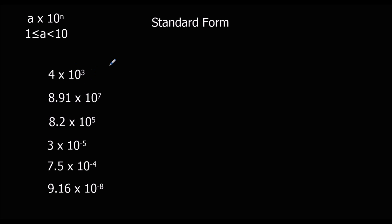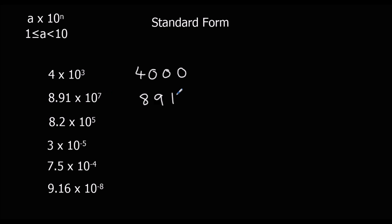Okay, so 4 times 10 to the power of 3 means 4 times 10 three times: 4 once, twice, three times — giving 4,000. 8.91 times 10 to the power of 7: times 10 once to get to 89.1, twice to get to 891, then 5 more times.